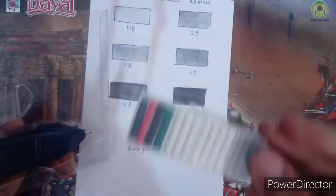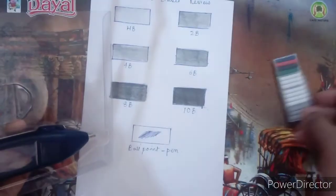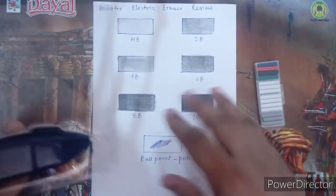As you can see, it contains seven white eraser refills, three grey refills, and four rubber refills.